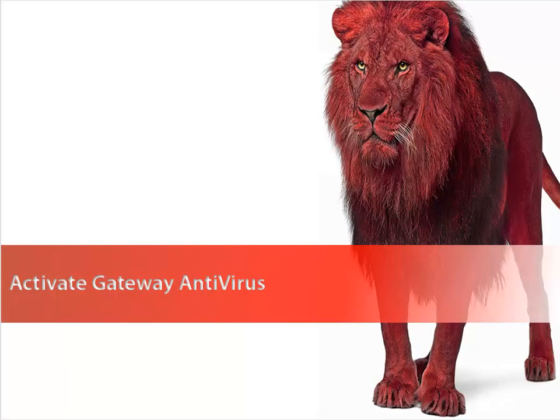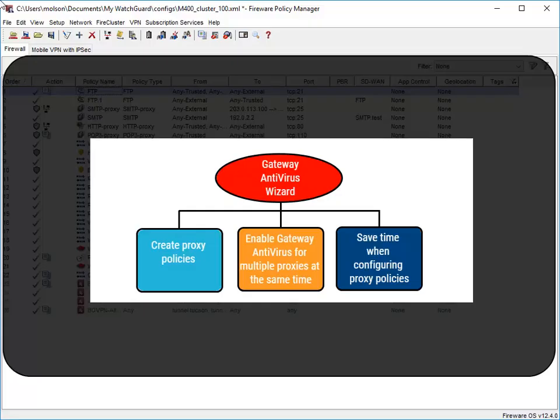There are two ways you can activate Gateway AV: with the Gateway Antivirus wizard and from within your proxy policies themselves. I'll show you how to use the wizard in this video. To learn more about activating Gateway Antivirus from within proxy policies, see Fireware Help. When you use the Activate Gateway Antivirus wizard, you can create proxy policies and enable Gateway AV for several proxies at the same time.